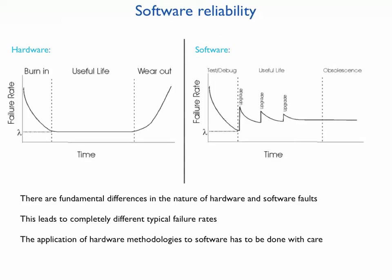In this slide I would like to show the main difference between hardware and software methodologies, and why there are software-oriented methodologies. On the left side you can see the bathtub curve — a typical failure rate for hardware. There are fundamental differences in the nature of hardware and software faults. Hardware faults usually happen because of environmental impact like cosmic radiation, temperature, or voltage, and because of hardware wear-out.